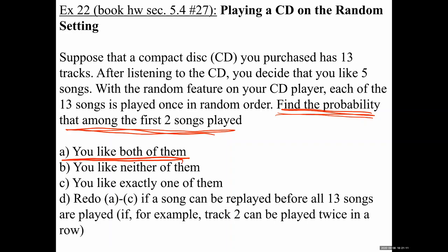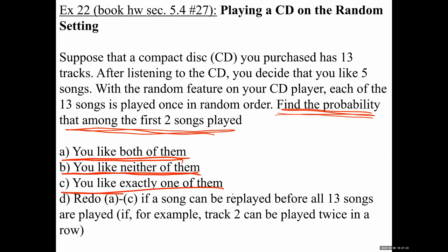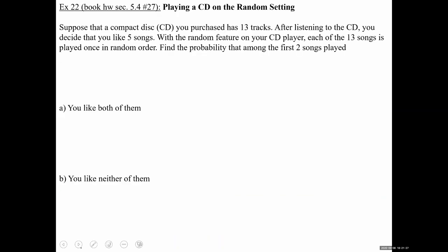Part B says find the probability you like neither of them — neither of the first two. Part C says you like exactly one of the first two. We'll skip Part D. So what we have to do is rephrase the question. We don't have a formula that says 'probability both,' so we have to rephrase. What does it mean to like both? We're only looking at two songs — the first two songs.